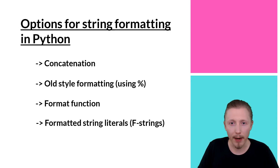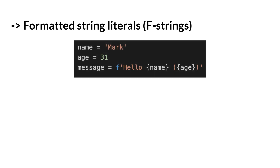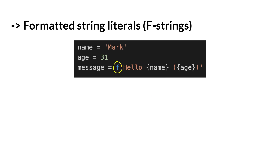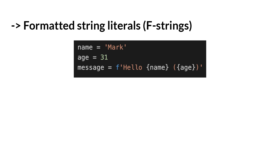That brings us on to my favorite type of string formatting — formatted string literals. You have the same name and age variables, and in the message you insert the variables directly into the string. The only thing you need to do is prefix the string with the letter F — that's why it's called an f-string. This allows you to access variables directly in the string and insert them. In my opinion this is by far the cleanest and nicest way — you don't need any additional functions, percent symbols, parsing, or worrying about argument order.